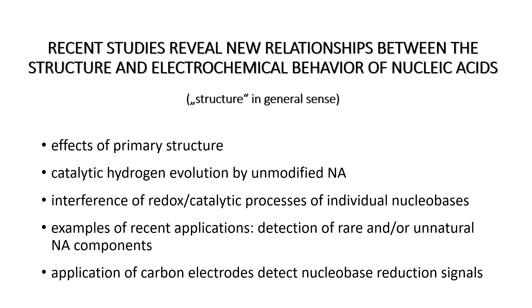Recently we observed a couple of phenomena that make this scheme a little bit incomplete and the behavior of nucleic acids at electrodes a little more complicated than was generally accepted. I will tell you a few words about effects of primary structure, something about catalytic hydrogen evolution by ion-modified nucleic acids and its interference with electrochemical signals of particular bases, brief recent applications of electrochemistry to detect DNA modifications with non-natural components, and finally how to circumvent application of mercury electrodes if needed.